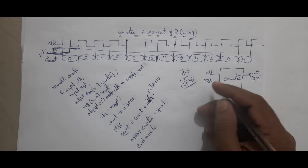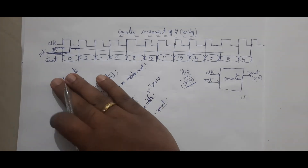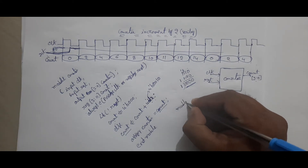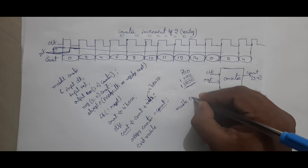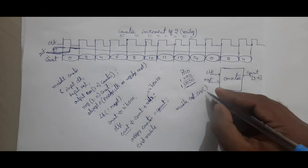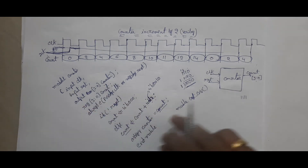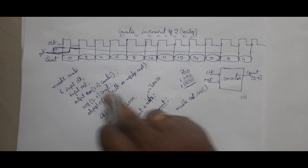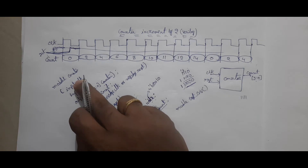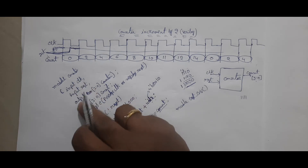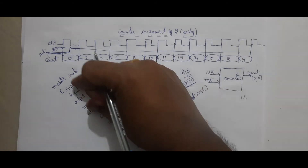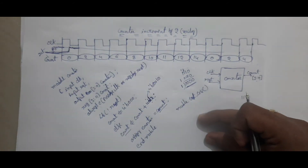This is the counter code. How can you write the test bench for this? This is the design file counter.v. You can develop a testbench.v that has a module with no inputs and outputs. From the test bench, what you have to do is generate the clock and reset — that is enough. If you generate clock and reset, then automatically the counter will be incremented. That is why you have to do the instantiation inside the module.